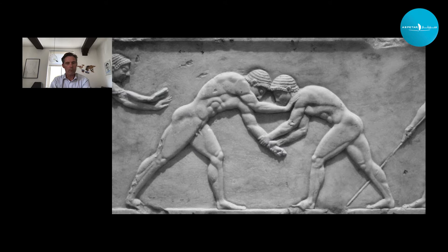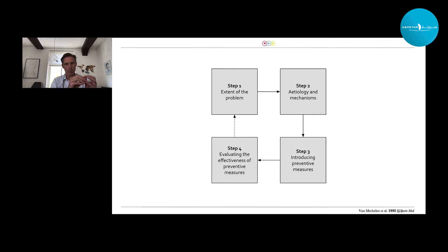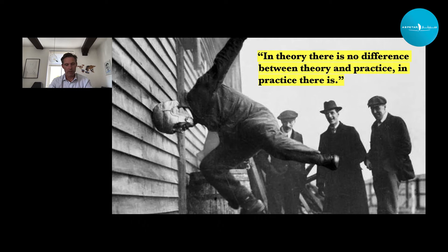Let's start with this brief history. When we talk about sports medicine in current times, we do not think back of the ancient Greeks. Arguably, where it started was 1992, when Wilhelm van Mechelen presented his Sequence of Prevention — a four-step model that describes the process from problem through etiology, injury prevention development, towards evaluation. And over time, this model has been used and used and used.